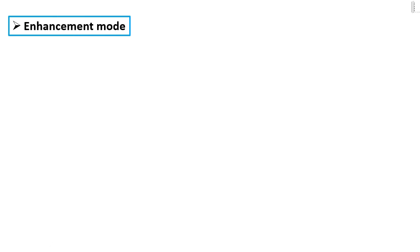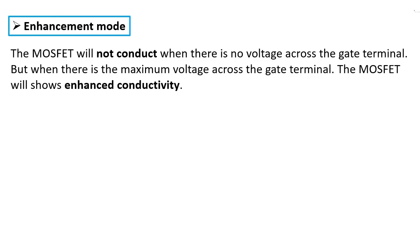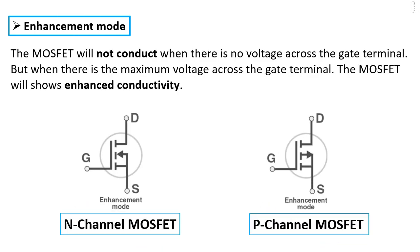Now let's see the enhancement mode. The MOSFET will not conduct when there is no voltage across the gate terminal, but when there is maximum voltage across the gate terminal, the MOSFET will show enhanced conductivity. As you can see here, we have two MOSFET symbols — n-channel and p-channel — using the same working principle.